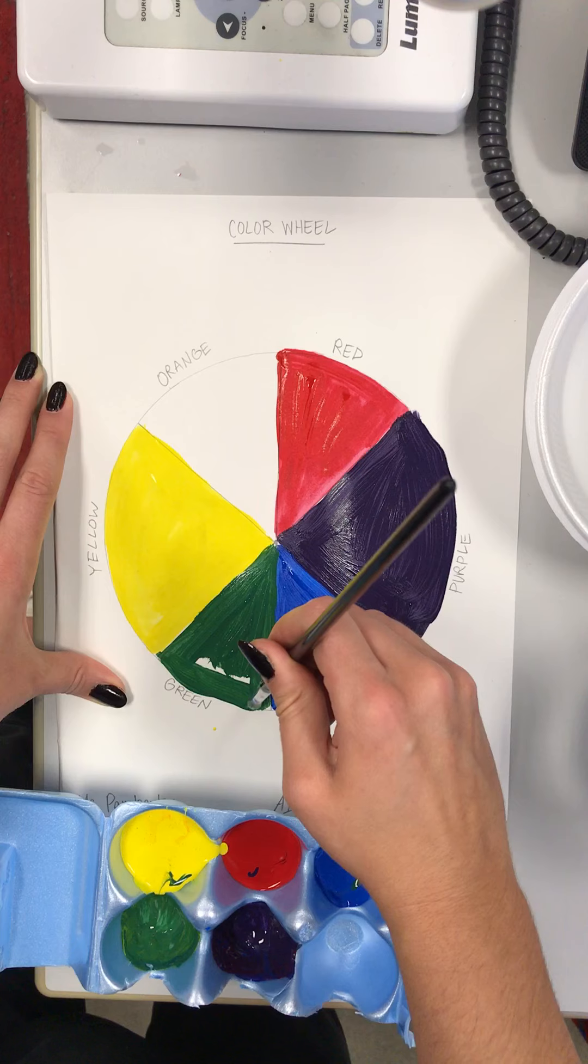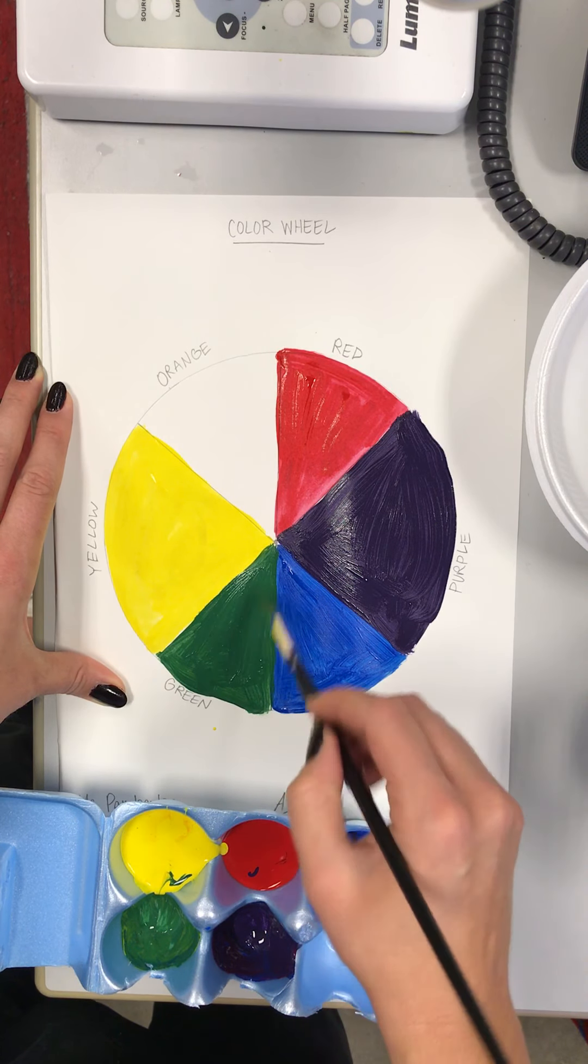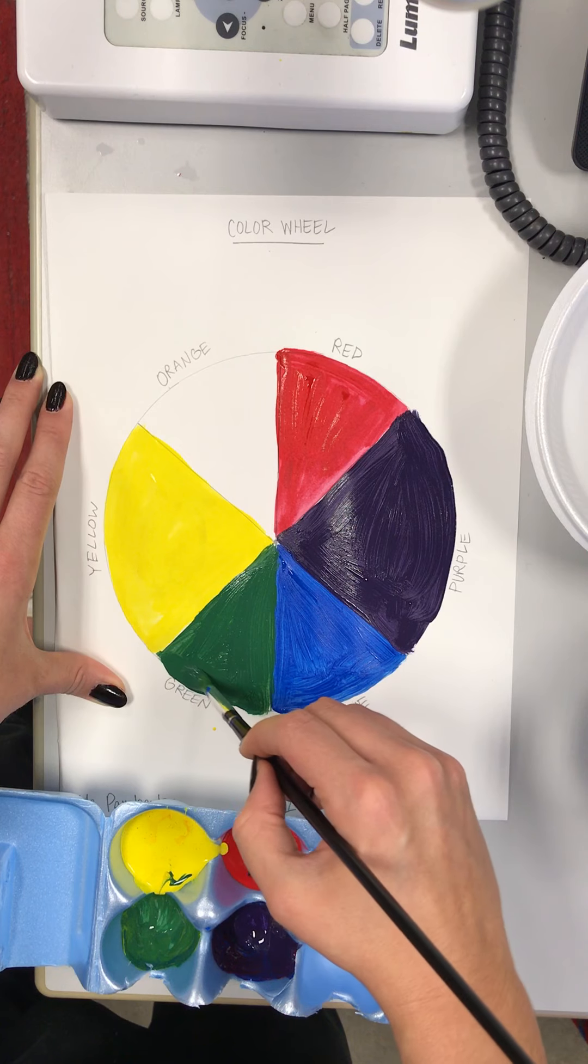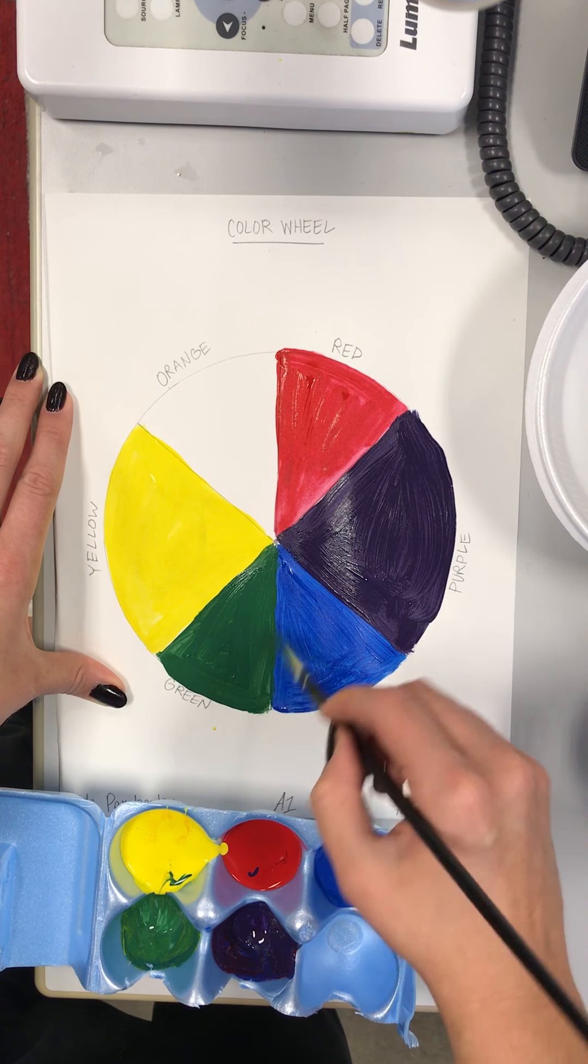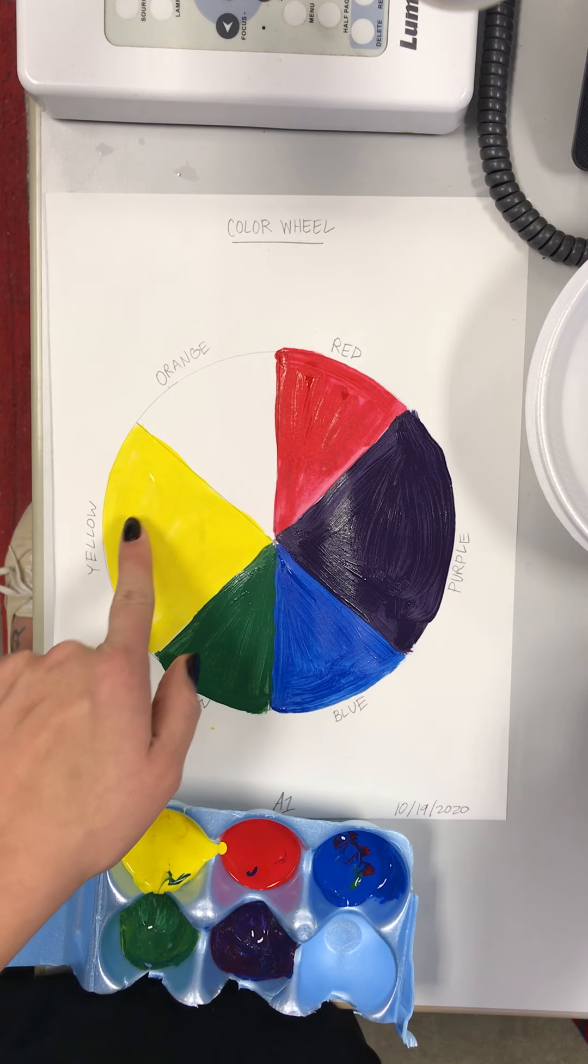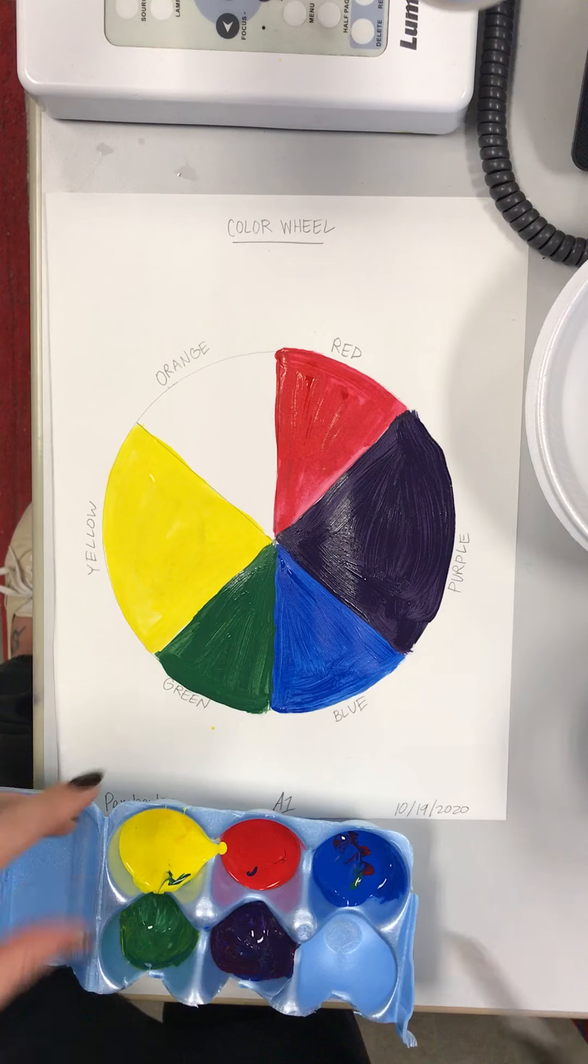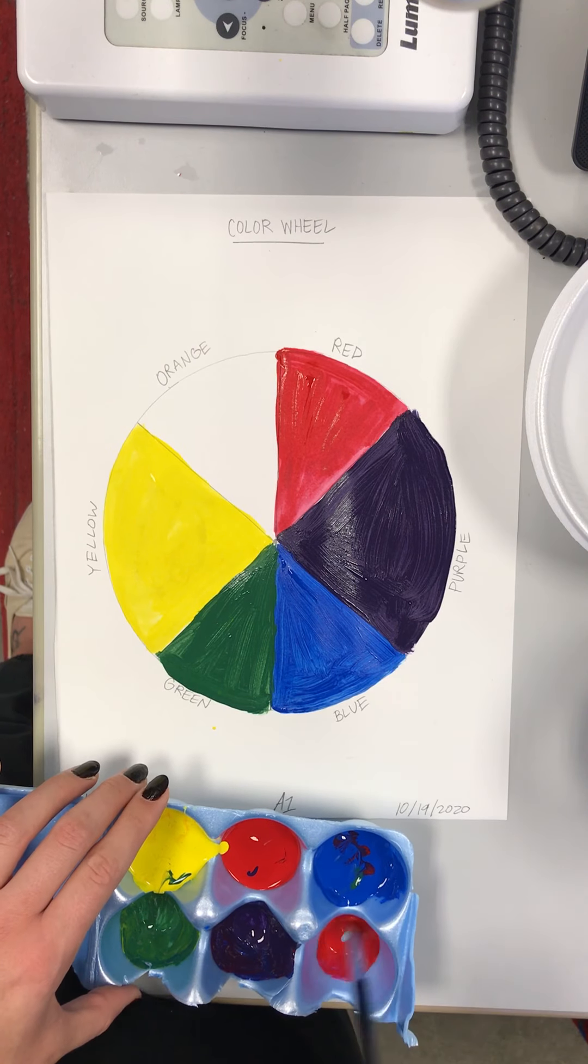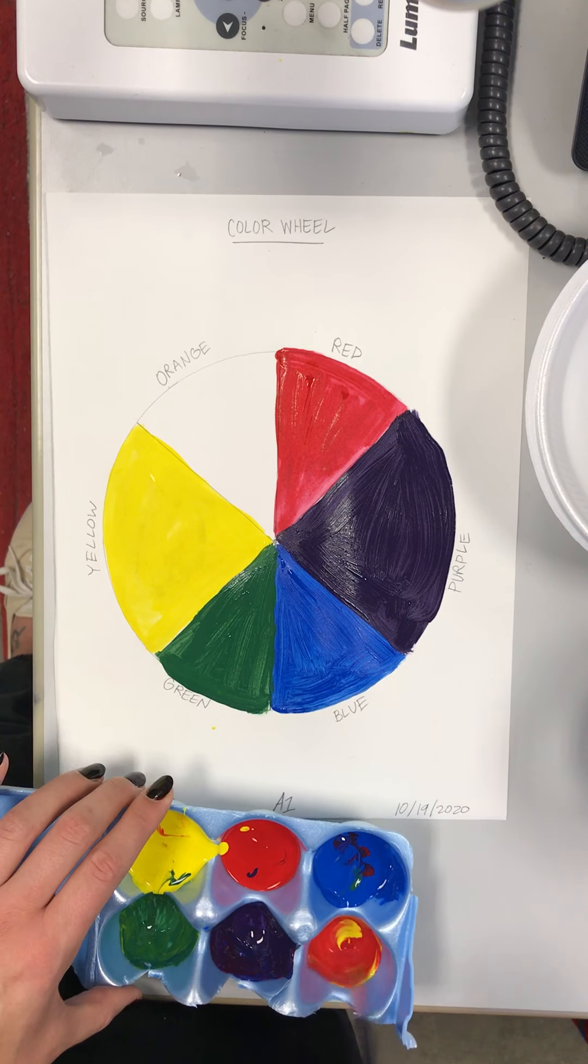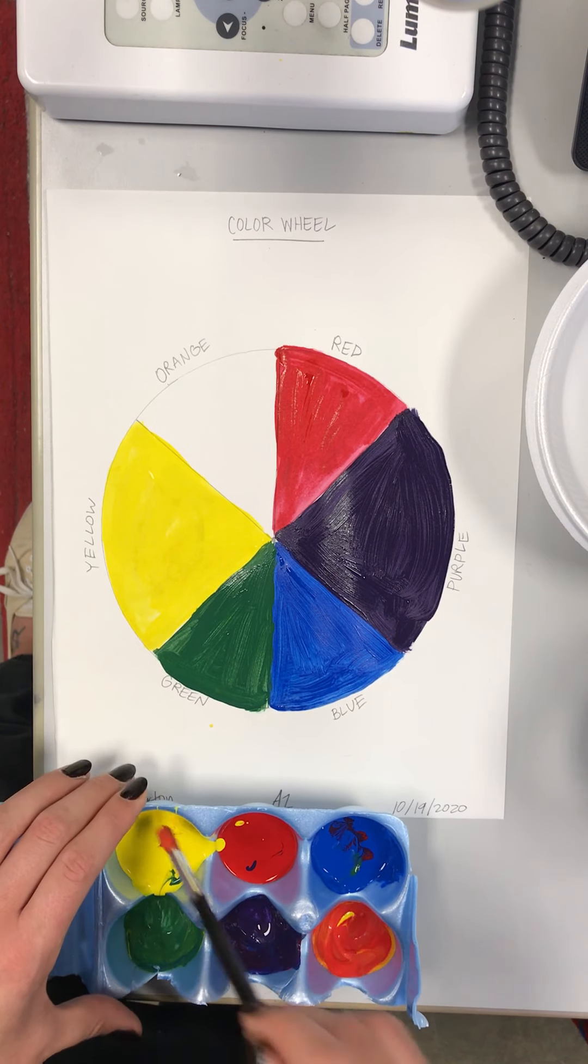We have one more step on our color wheel after the green, and that is going to be orange. By looking at our color wheel, we know that our yellow and our red are right next to it, so yellow and red are going to make orange.